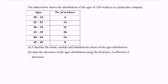Next, we have the situation for data descriptive, this time for grouped data. The table shows the distribution of the age of 120 workers in a particular company. Part A: calculate the mean, median, and standard deviation of the age distribution.